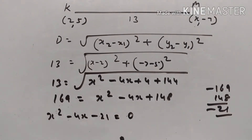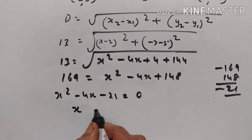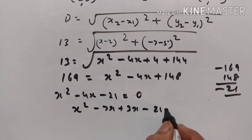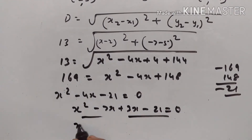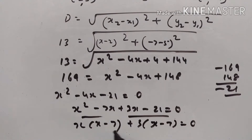To factor x² - 4x - 21 = 0, we find two numbers: 7 and 3, since 7 × 3 = 21. So x² - 7x + 3x - 21 = 0, giving x(x - 7) + 3(x - 7) = 0. Since (x - 7) is common: (x - 7)(x + 3) = 0.